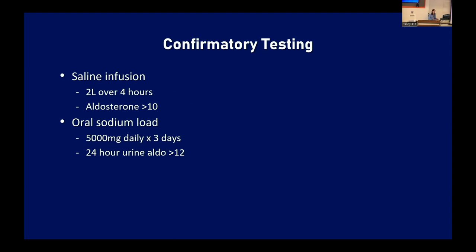The other confirmatory option is an oral sodium load. Have the patient consume at least five grams of sodium per day for three days, then pull a 24-hour urine collection. You're looking for a urine aldosterone of at least 12, and you want the urine sodium to be greater than 200 to confirm adequate loading. If the patient thinks they can't get that much sodium, you can prescribe sodium tablets — though in the American diet it's quite easy; even a Big Mac has a full gram of sodium.